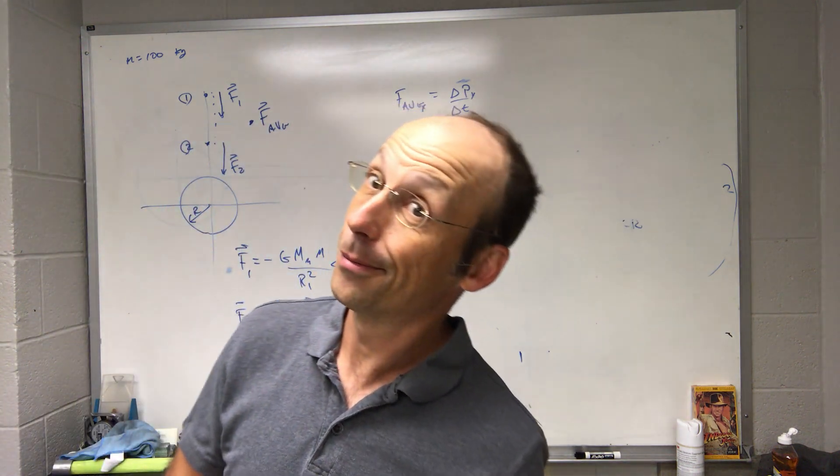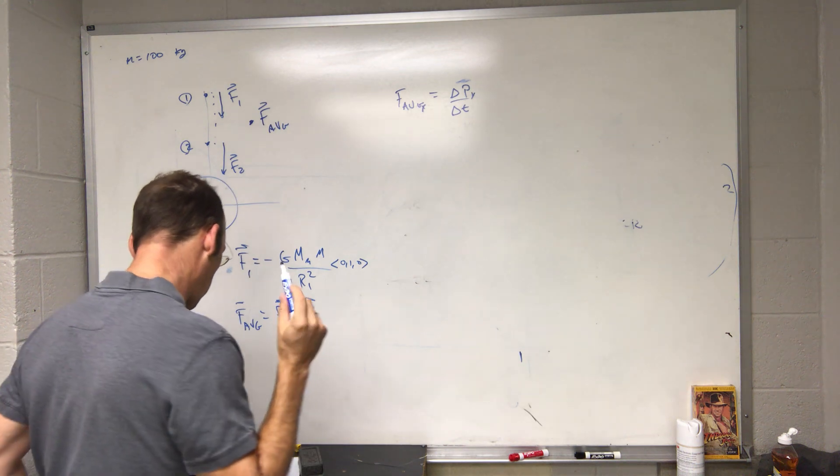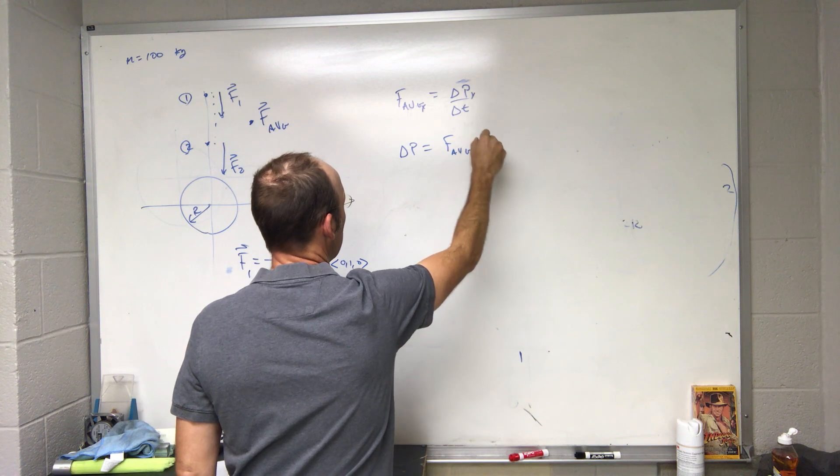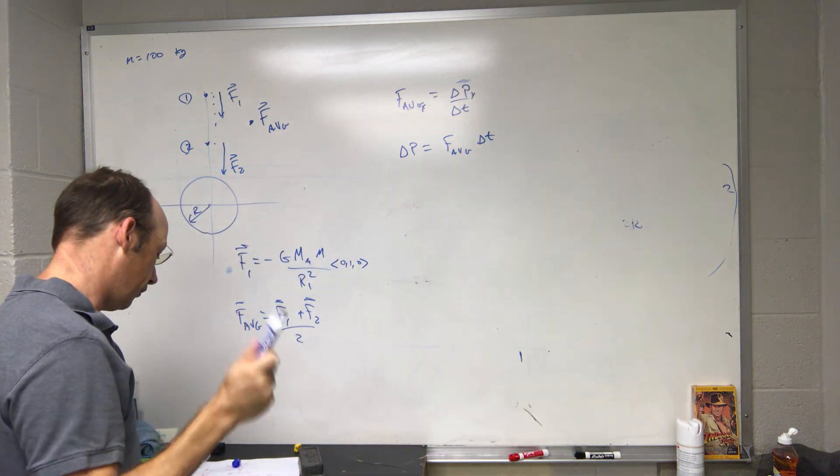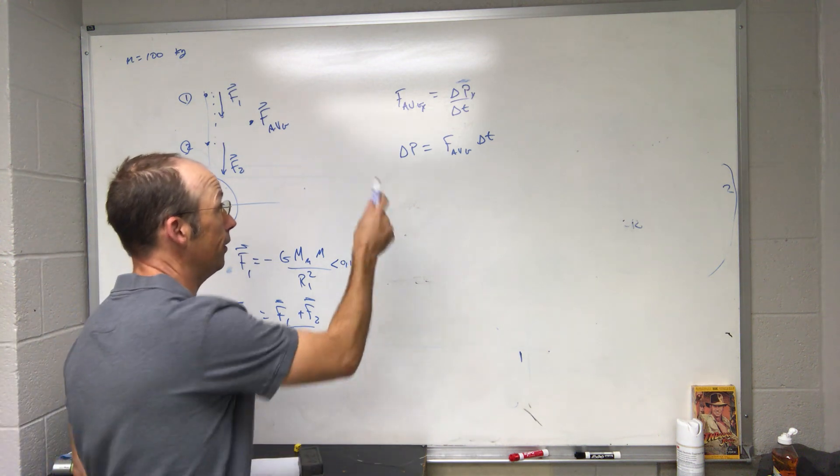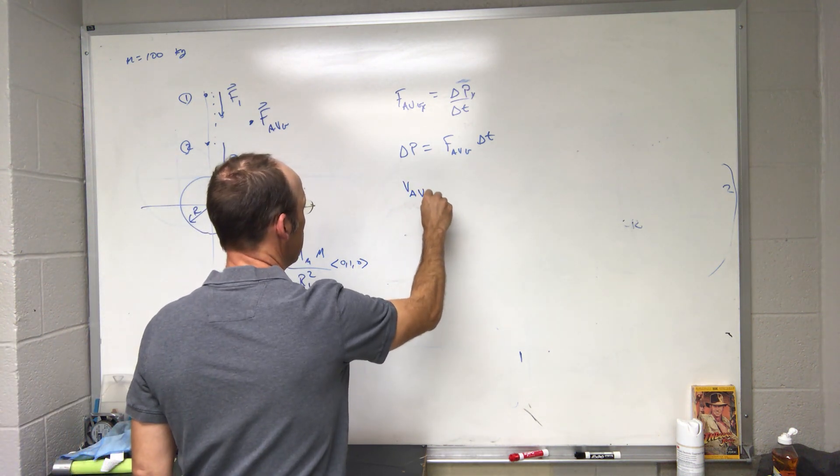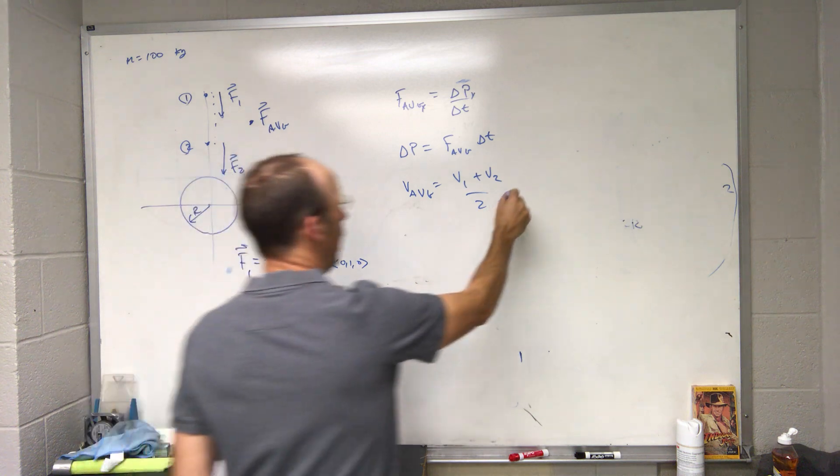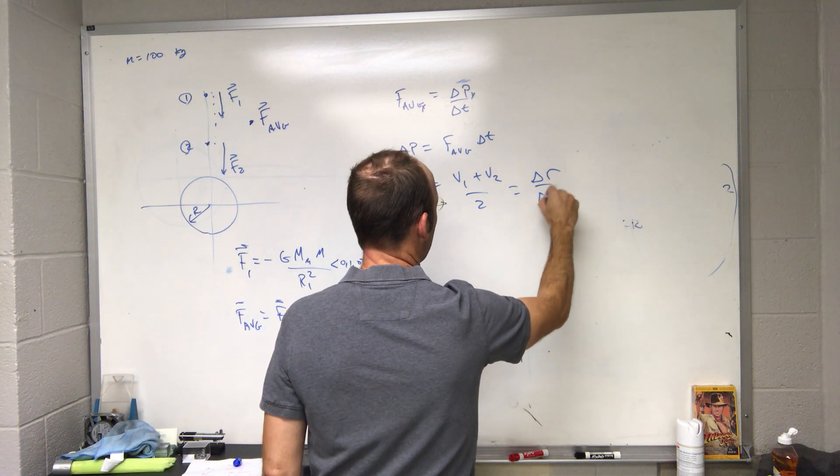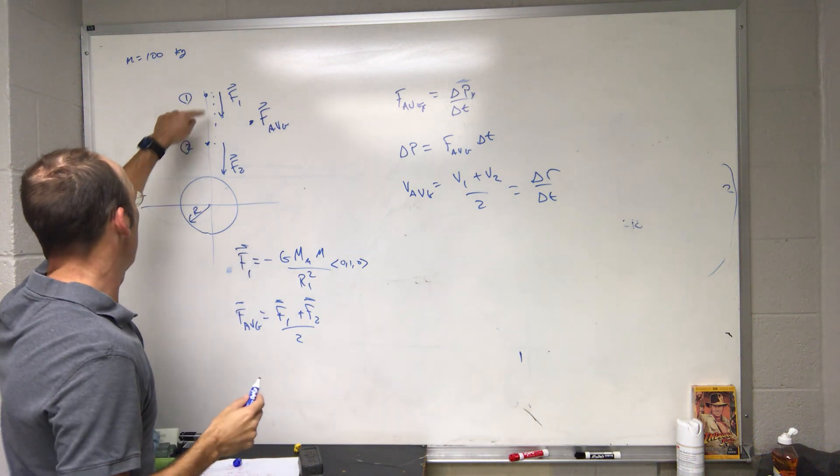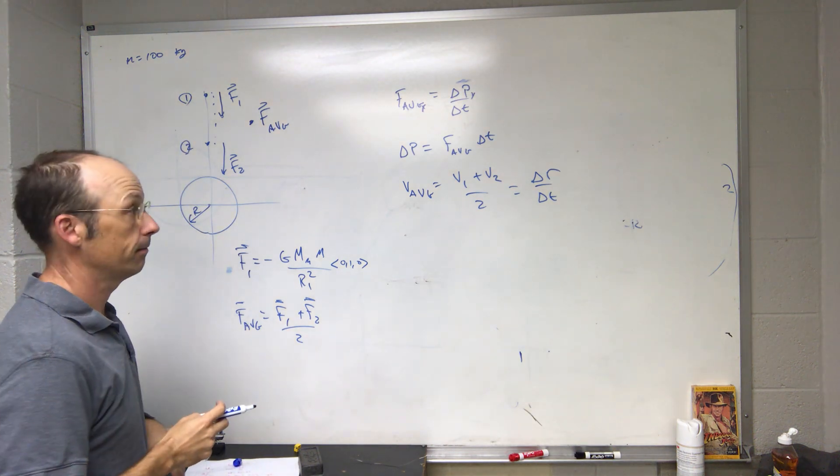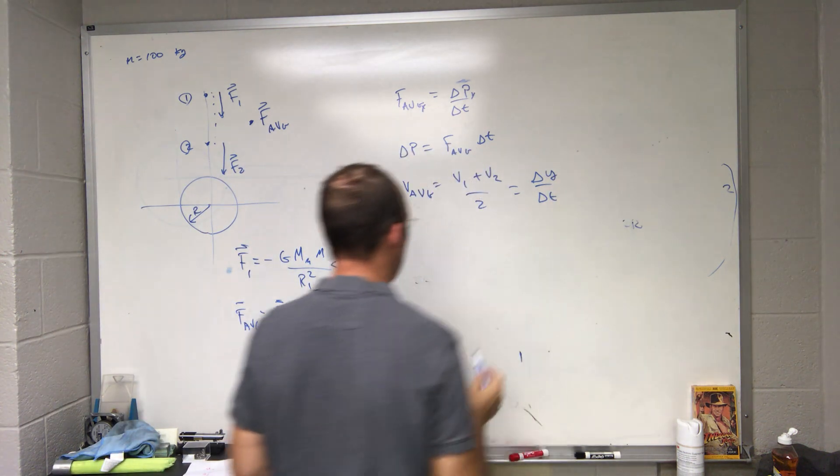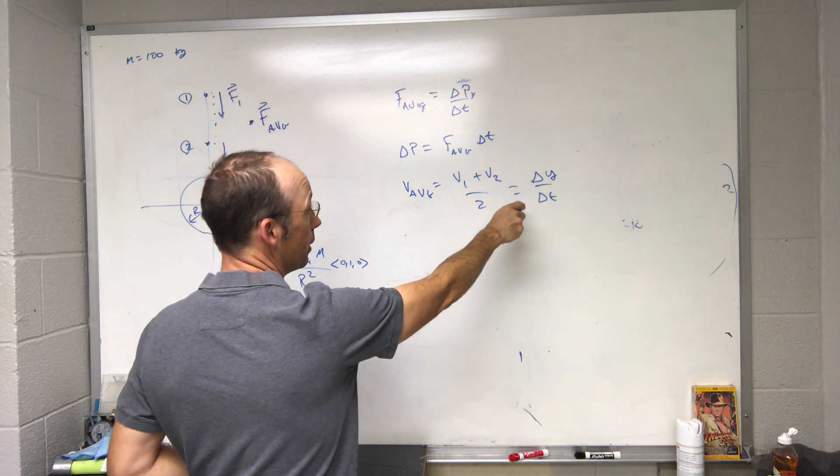Let me just solve for delta p. Delta p in the y direction, F average delta t. But again I don't know delta t. I have another thing that I have delta t with, and that's the average velocity. It's going to be v1 plus v2 over 2, that's definition of average, and that's going to be equal to delta r over delta t, where r is going to be r2 minus r1. Delta r, that's in the y direction. I really should put this as delta y because I said I was dealing with the y direction.